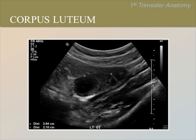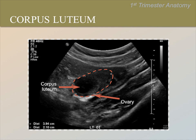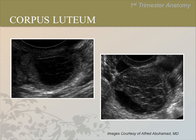Here is another corpus luteum. Can you see the ovary and corpus luteum? Please pause the video now to give everyone time to discuss in the group. Here we have labeled the corpus luteum and outlined the ovary to make them more obvious. Sometimes there is echogenic material inside the corpus luteum when it bleeds. This gives the corpus luteum the appearance of a complex cyst and is also normal. Can you identify the echogenic material inside the corpus luteum in each image? Please pause the video now to give the group time to discuss. Here we have labeled the echogenic material within each cyst to make it more obvious.